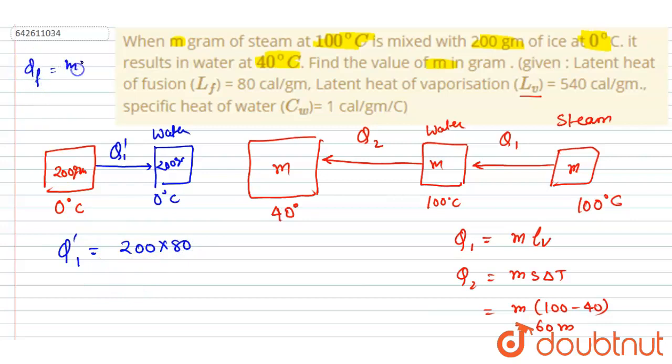So fusion is m into Lf and latent heat of vaporization is m into Lᵥ, so we used that. So if you put the value here, okay, we got this. Now while converting this water at 0°C.